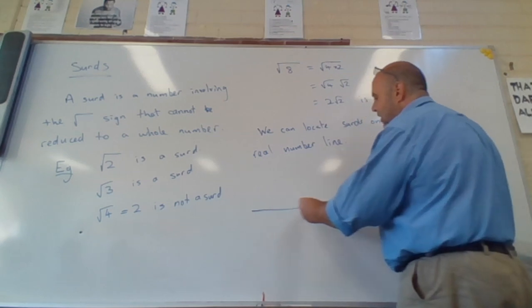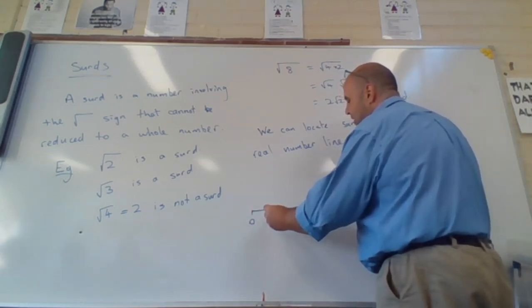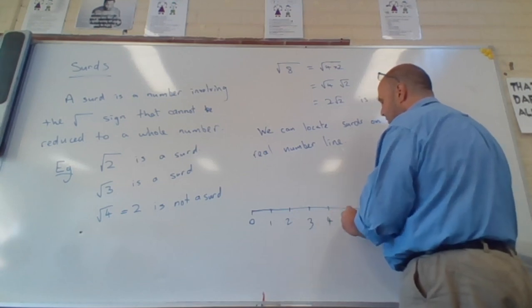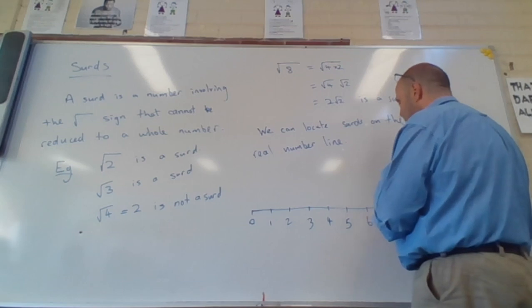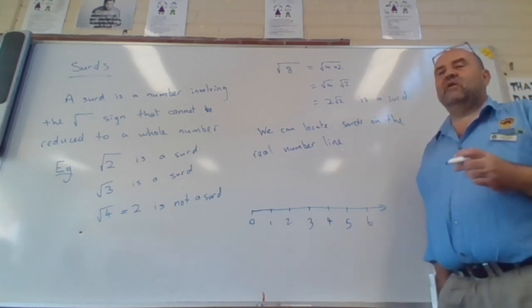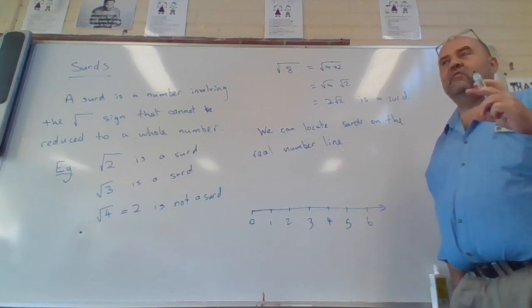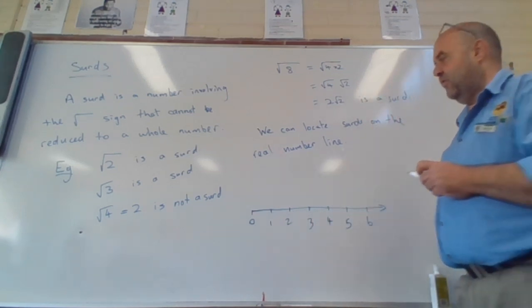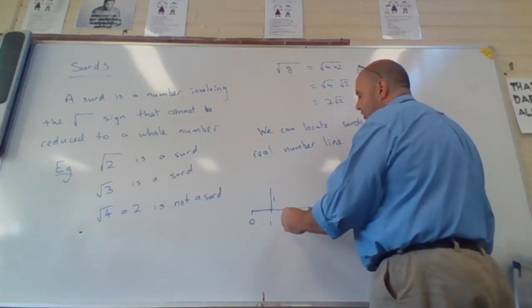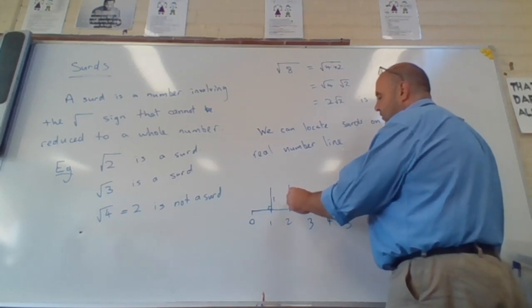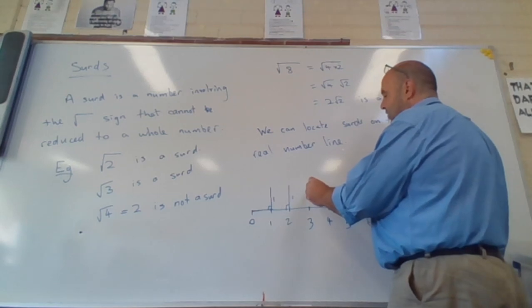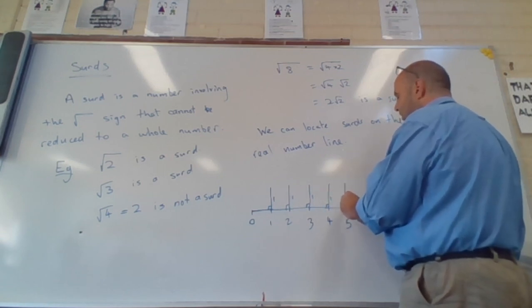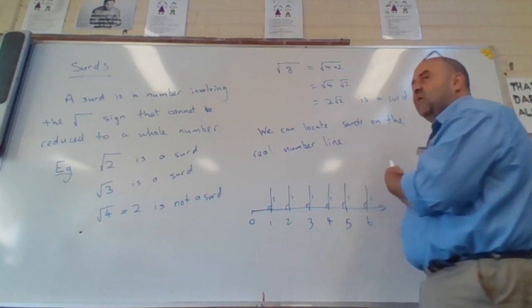So if I was to draw a number line starting at zero with marks every one unit, so one, two, three, four, of course I'm doing this as neatly as I possibly can. And then I went along to every unit mark, so at every whole number, I went along and I drew a vertical one unit length. That's one unit and it's perpendicular. Over here at two, that's one unit. Over here at three, that's one unit. At four, that's one unit. At five, that's one unit. At six, that's one unit. I can keep this going, of course.